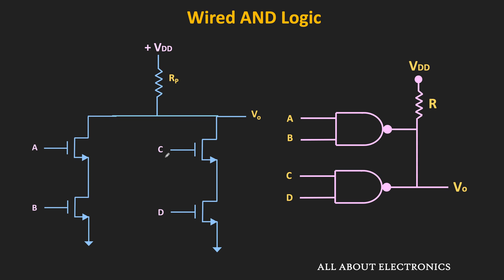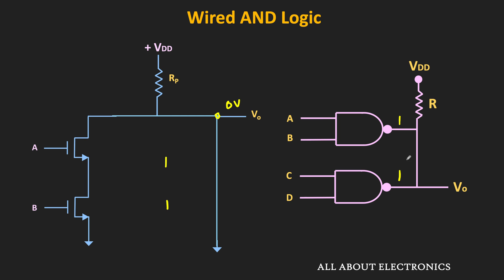Similarly, when C and D inputs are both 1, those two transistors will turn on, and the output of the second NAND gate will become 0. Since this node is again connected to the ground terminal, the overall voltage becomes 0V. So in this wired connection, when any one of the outputs is 0, the overall output is also 0. And whenever both outputs are 1, the overall output will also become 1.